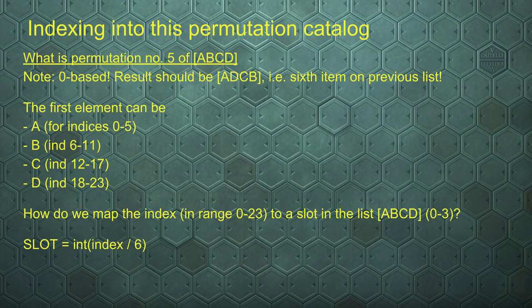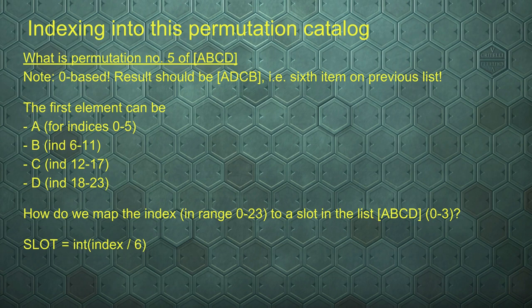So the first element, when we look up an index, could either be A, B, C, or D — depending on whether the index falls in ranges 0 through 5, 6 through 11, 12 through 17, or 18 through 23. How do we map the index in range 0 to 23 to a slot on the list A, B, C, D with positions 0, 1, 2, or 3? Obviously when we want to reduce a 24-cycle to a range of 4, we can divide by 6, because 4 × 6 is 24. So our slot — the number indicating where on the list we want to pick an item from and put it at the head of our result — is simply the index divided by 6, rounded down or converted to integer.